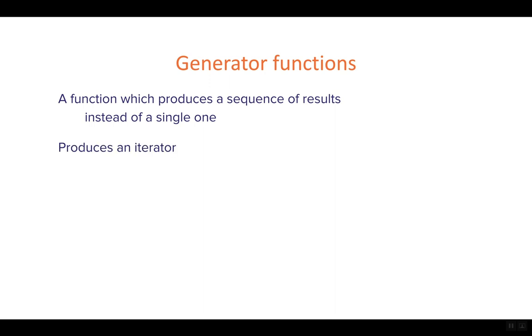So basically, a generator produces an iterator. The iterator goes through the elements that the generator produces. We use yield, the keyword yield instead of return.